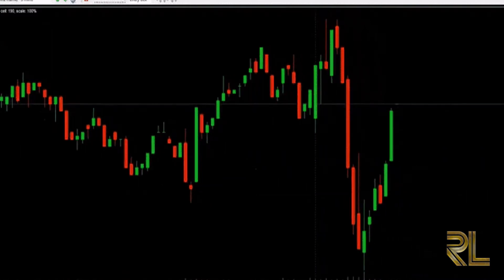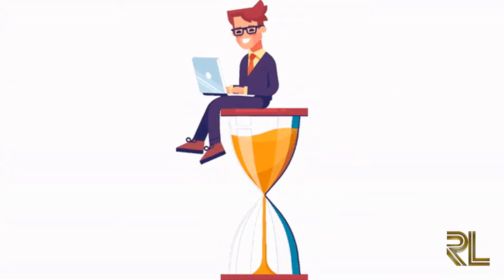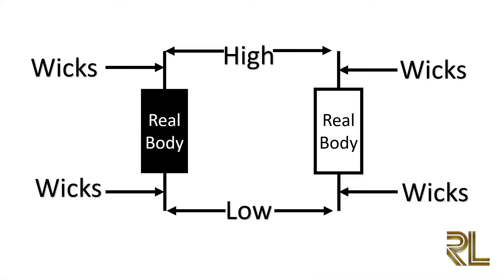The description of the candles can be easily explained as follows: one, the filled part of the candlestick is called the real body; two, the thin lines poking above and below the body are called shadows, wicks, or tails; three, the top of the upper shadow is the high; four, the bottom of the lower shadow is the low.